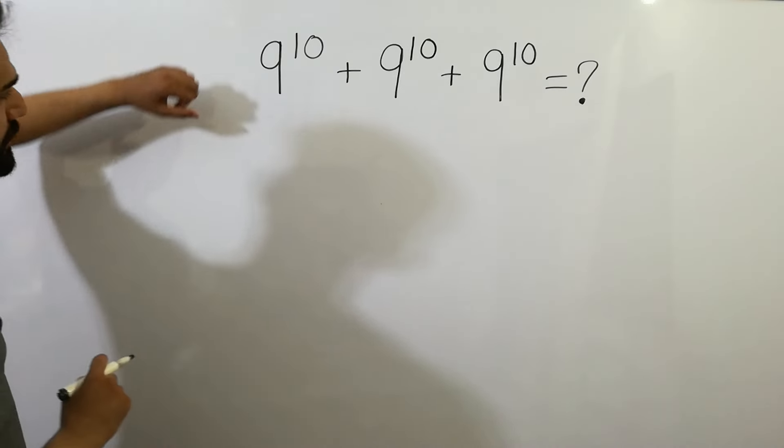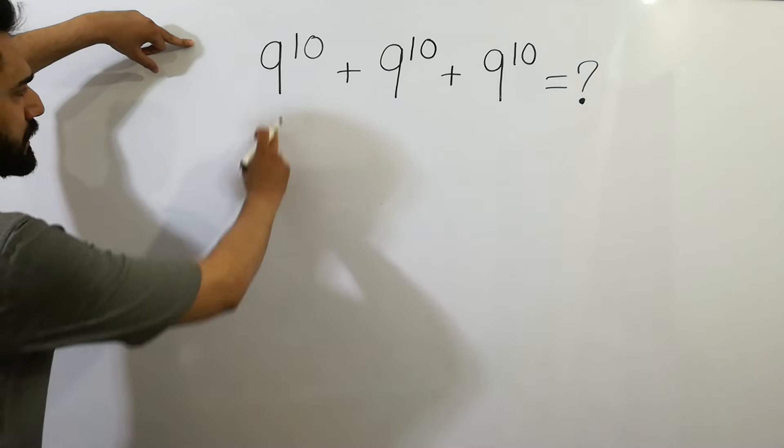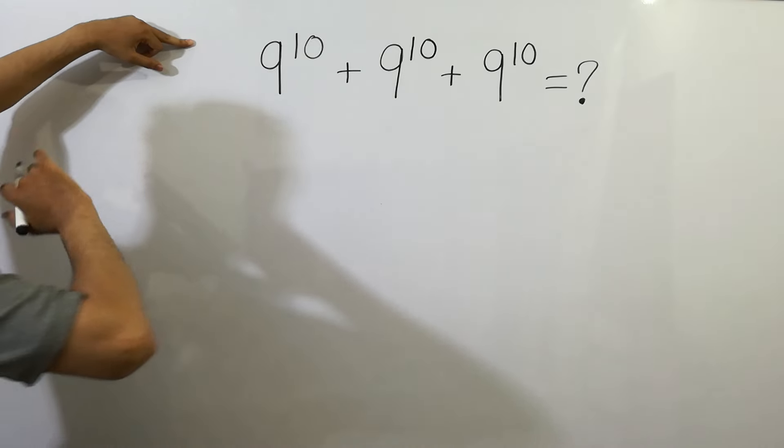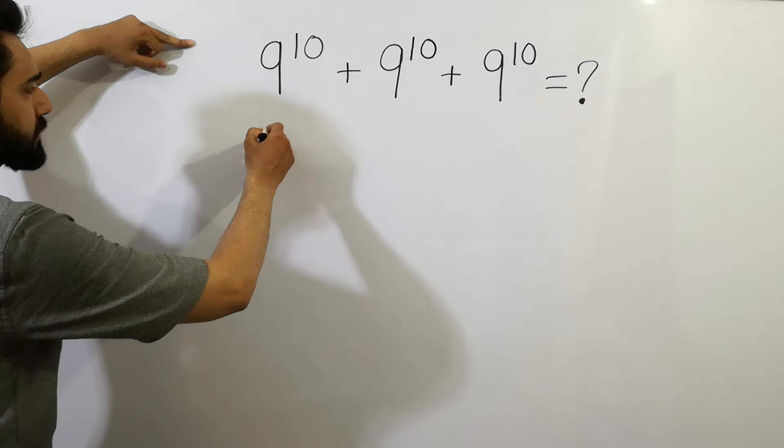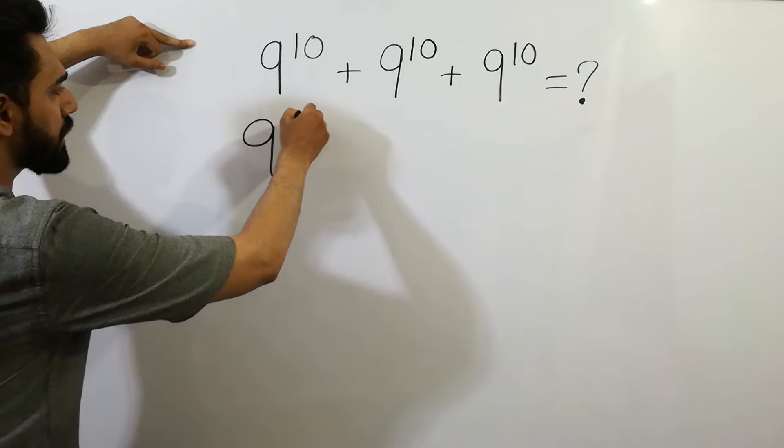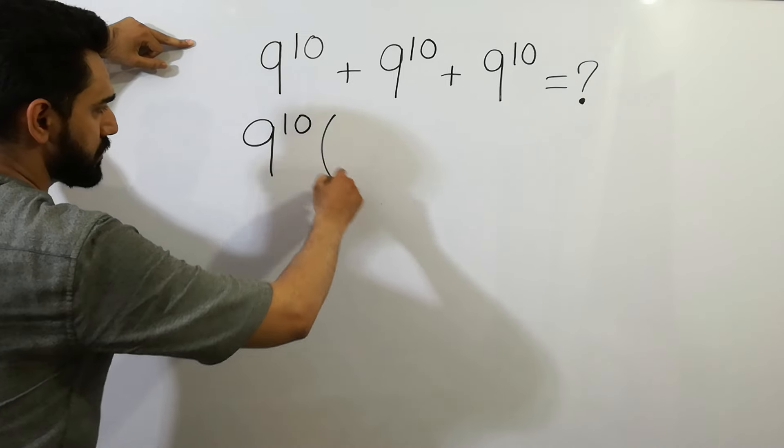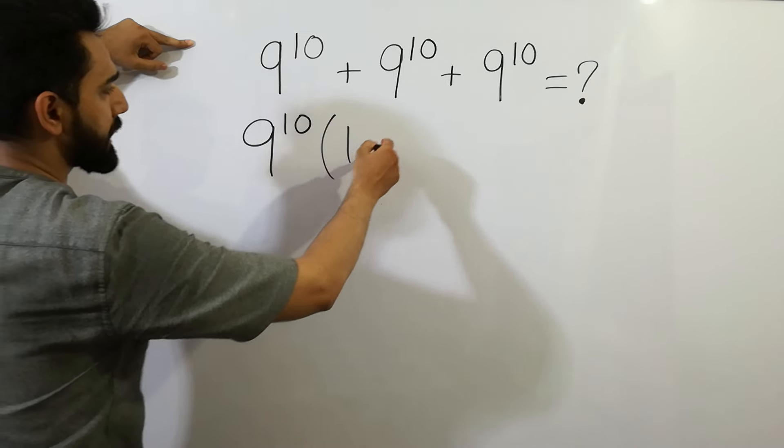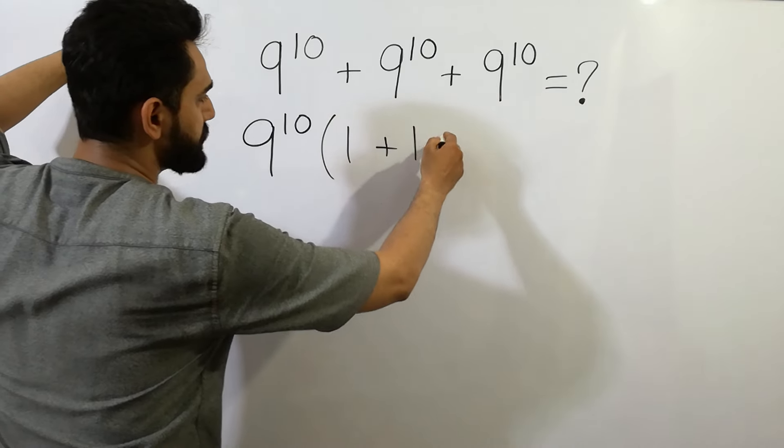If we solve it, you can see these three values are similar. So we can combine the value of 9 to the power 10, and we get 1 three times.